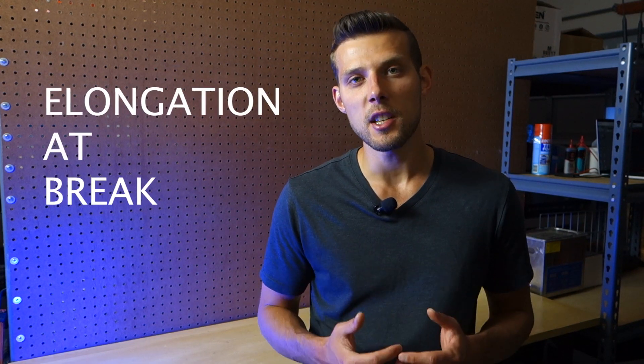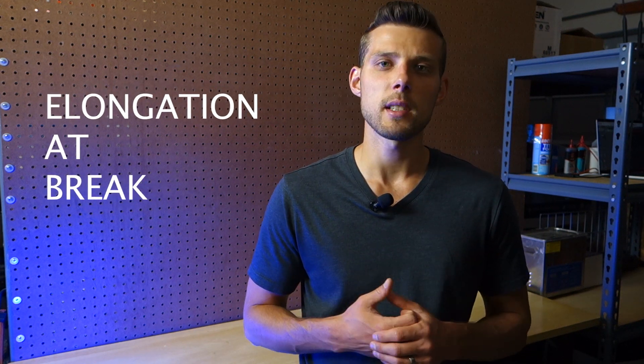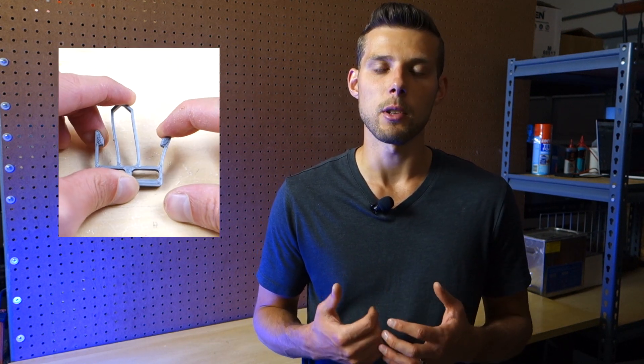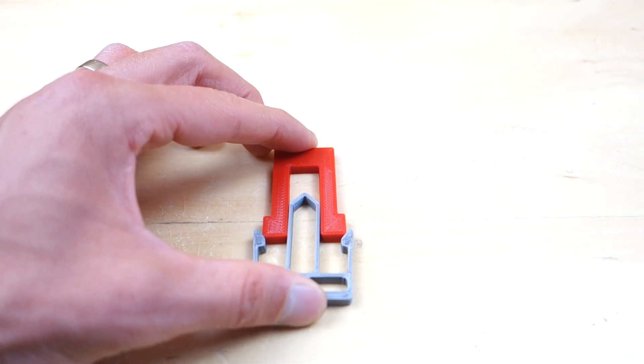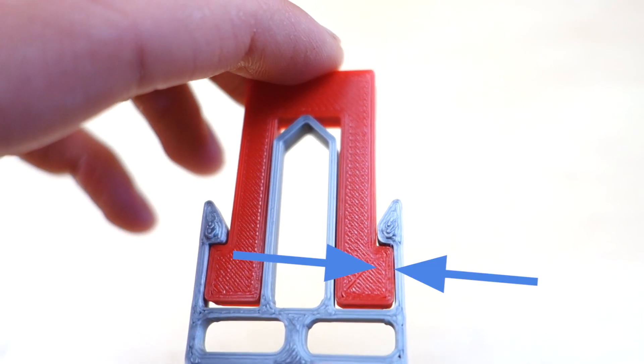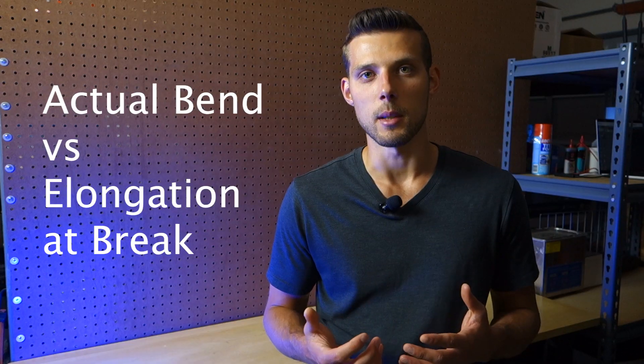And here it is, elongation at break. Elongation at break tells you how much you can bend the snap hook before it will break off. This means that you can predict whether a snap will break or not while you're still designing the snap. Simply compare how much the snap hook will actually bend to how much the material can bend.